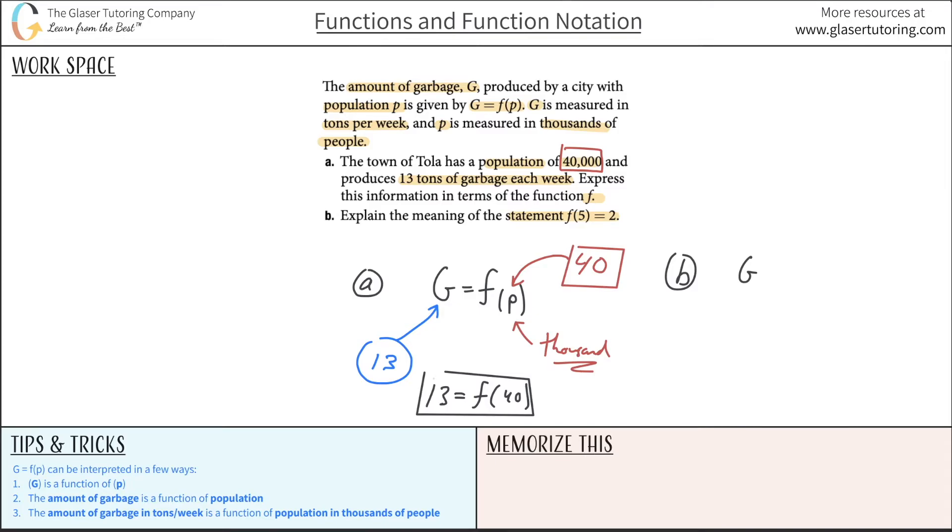Explain the meaning of the statement F of five is equal to two. Remember, let's start with the general function again: G is a function of P. The richer context is the amount of garbage in tons per week is a function of the population in thousands of people. If I look at this equation that was given, notice how this is given as the reverse of this. The function here is on the left hand side and now this is on the right hand side. That doesn't mean a thing. If I were to say A equals B, that's the same thing as saying B equals A. So I'm going to take this equation and just flip it, so we have it in the same form as the G function.